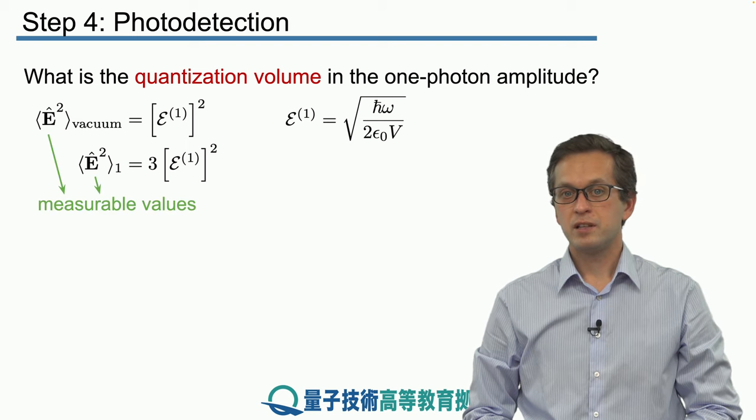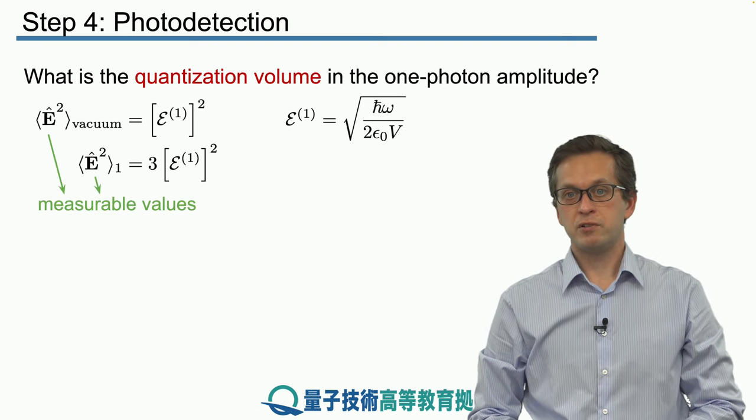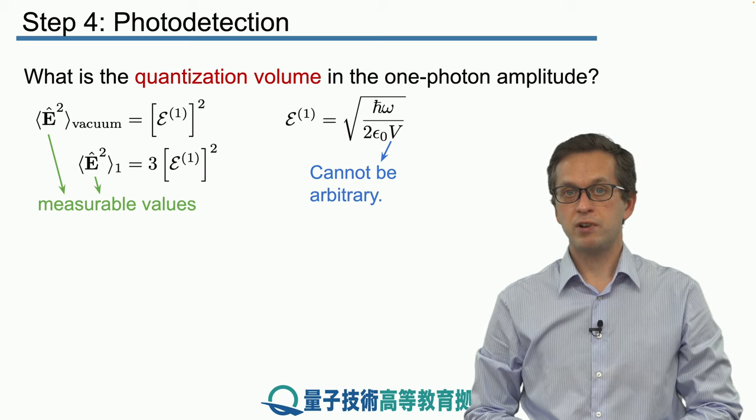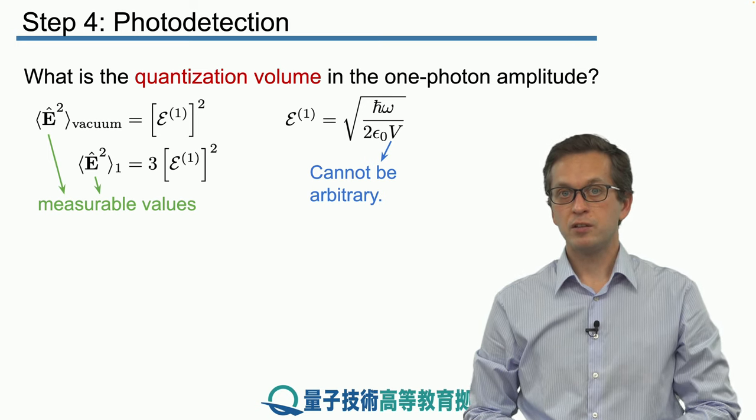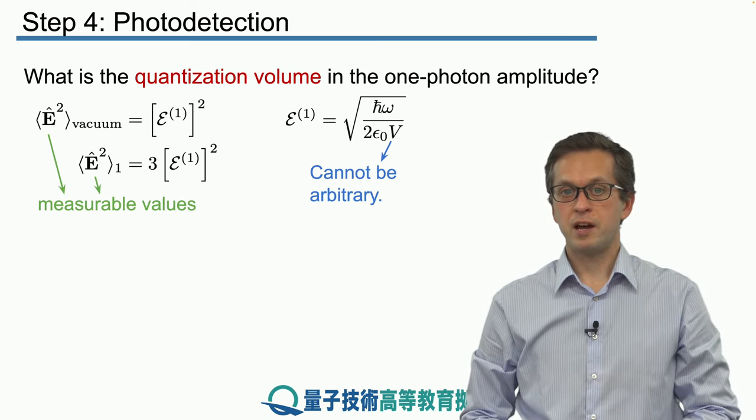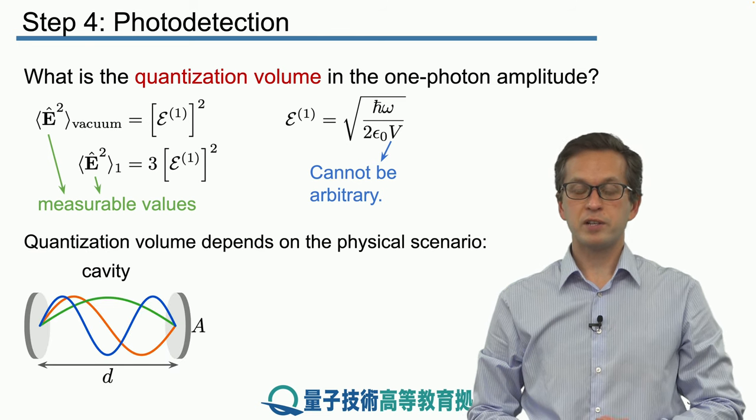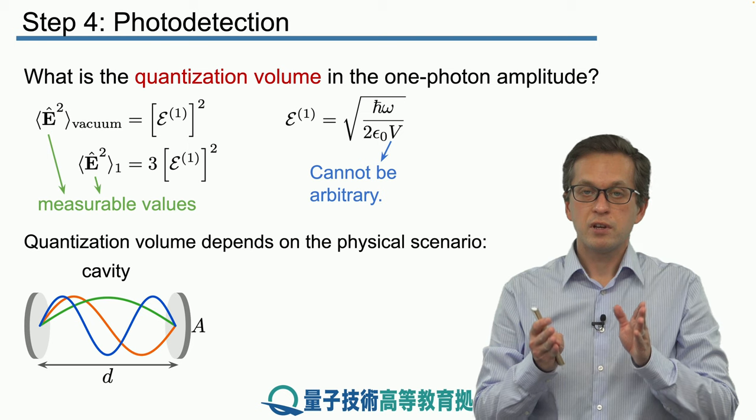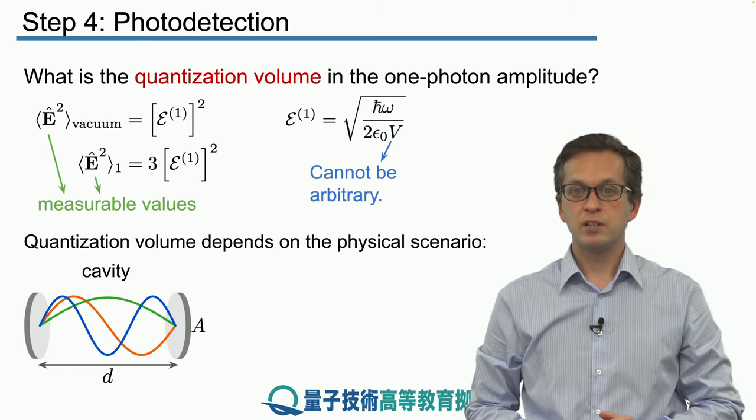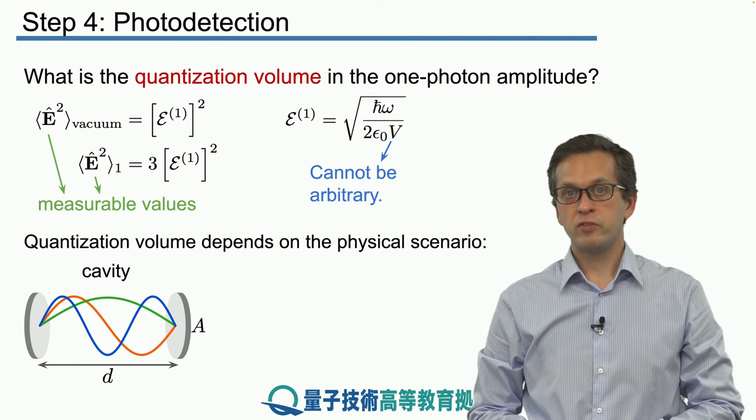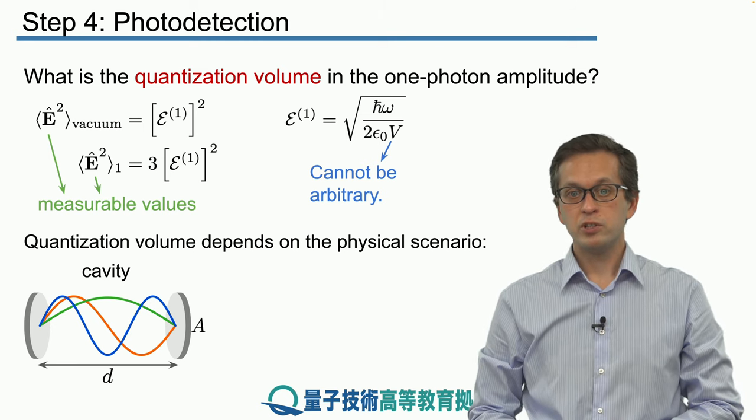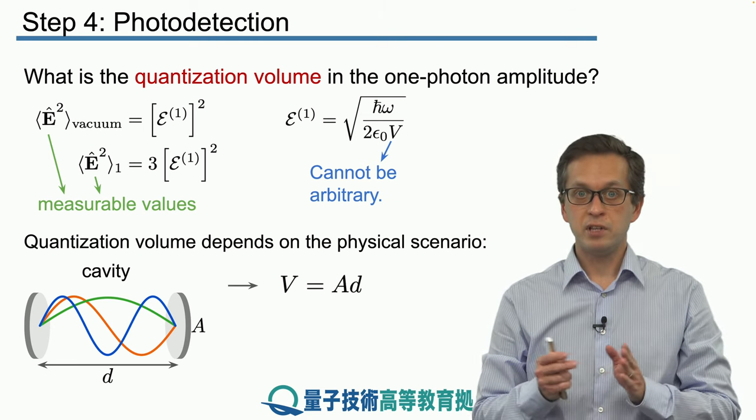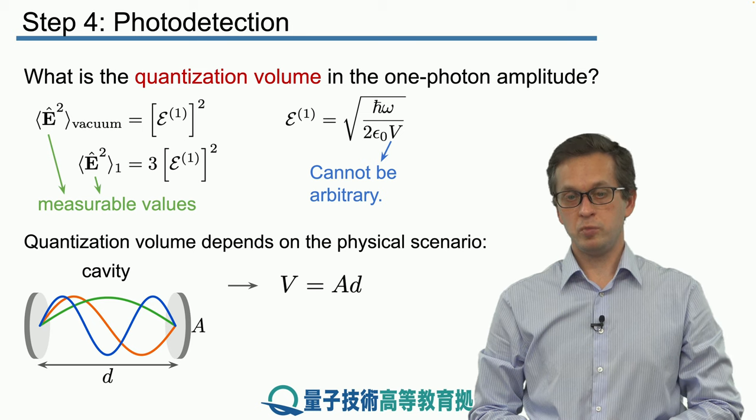This means that V cannot be an arbitrary value that we are free to choose randomly. It is connected to the physical scenario that we are considering. For example, if you have an electric field contained between two mirrors, in other words you have an optical cavity, then the quantization volume is given by the volume of the cavity which is just A times d, the separation between the two mirrors.